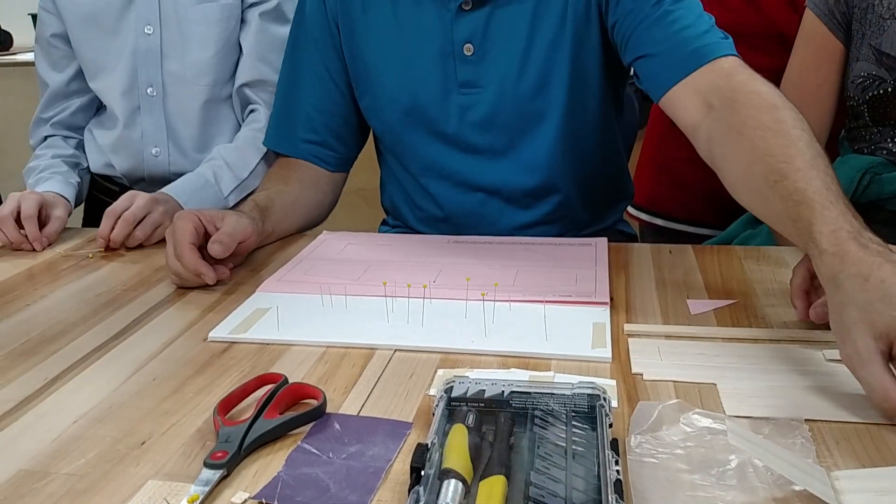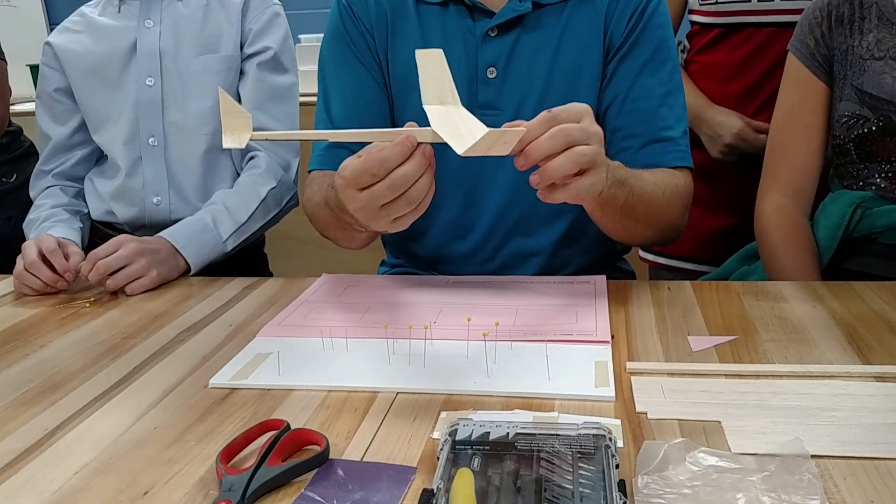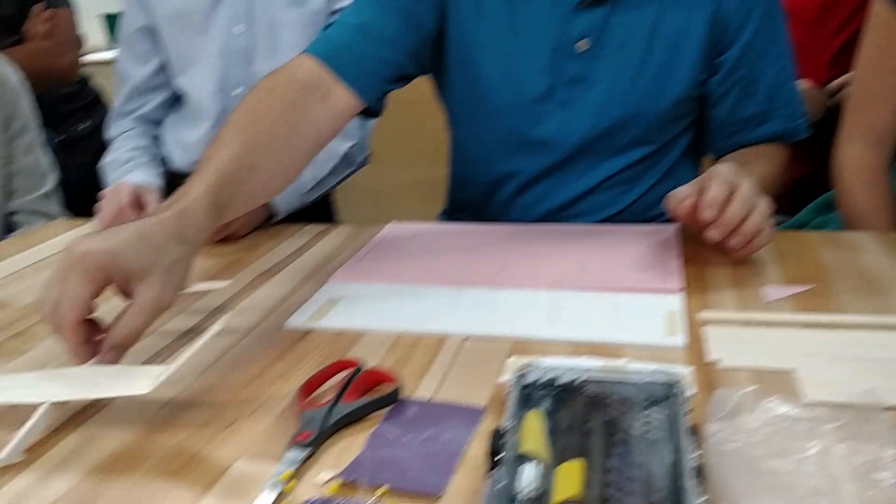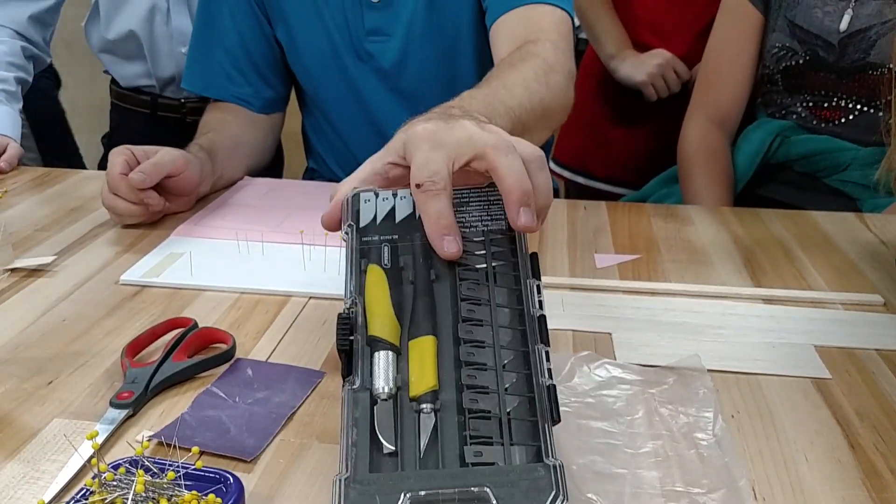Okay, so we are going to be constructing our balsa wood flyer gliders 2.0. Let's get started. The things that you'll need: a piece of wax paper, a hobby knife,